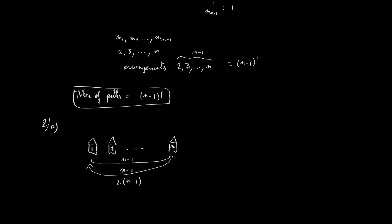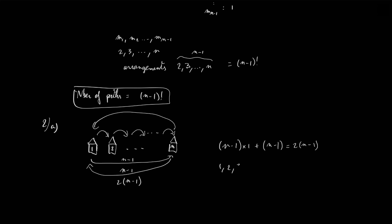There is an actual path achieving a total distance of 2(n-1): the path where the mailman starts at house 1, goes to house 2, 3, 4, etc., up to house n, and then walks all the way back. The distance going forward is 1+1+1+···+1, which is n-1, plus the return distance which is also n-1. So we reach this minimum value of 2(n-1) with the path 1, 2, 3, ..., n, and finally back to 1.